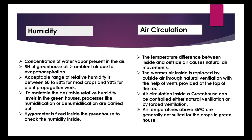Humidity generally refers to the concentration of water vapor present in the air. The relative humidity of greenhouse air is greater than ambient air due to evapotranspiration. The acceptable range of relative humidity is between 50 to 80% for most crops and 90% for plant propagation work. To maintain desirable relative humidity levels, processes like humidification or dehumidification are carried out.